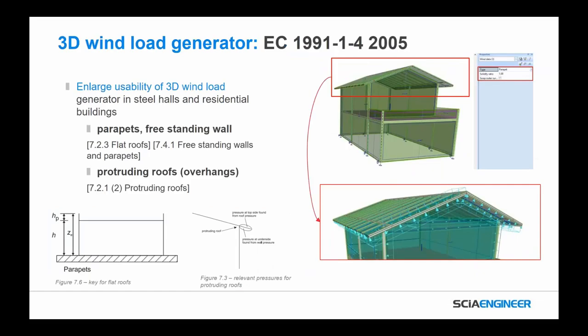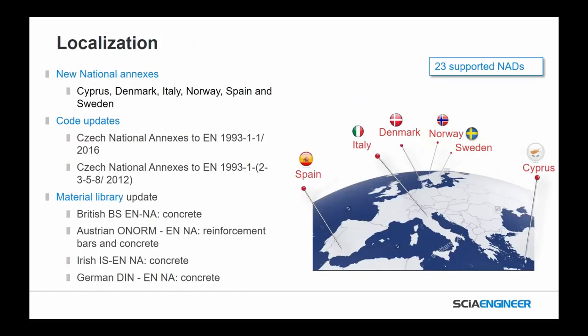We've also made some improvements to the 3D wind generator for the Eurocode — added the ability to utilize parapets and freestanding walls, and protruding roofs or overhangs within the 3D wind generator. Using provisions from EC 1991-1-4 to make the 3D wind load generator more robust and handle more cases. Finally we've done a lot of localization — added new national annexes for Cyprus, Denmark, Italy, Norway, Spain, and Sweden; code updates for the Czech national annexes; and new material libraries for British concrete, Austrian reinforcements, Irish concrete, and German concrete. Improvements across the board so that we remain the leader in supporting national annexes in Eurocode.